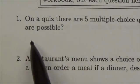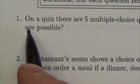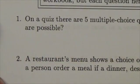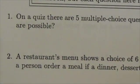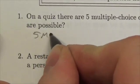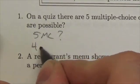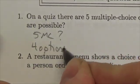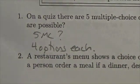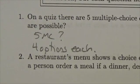This question says: on a quiz there are five multiple-choice questions each with four options. So let's summarize: five multiple-choice questions, four options each. The question is how many ways are there of answering the questions?